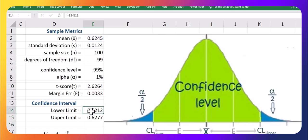So this is my 99% confidence interval for this problem. So the true length of each of these hexagon head cap screws is somewhere between 0.6212 inches and 0.6277 inches with 99% certainty.